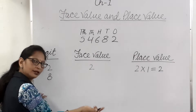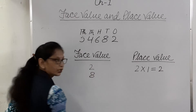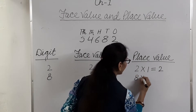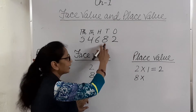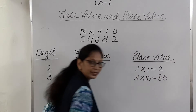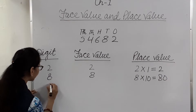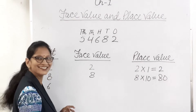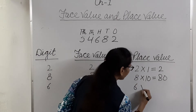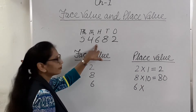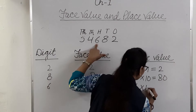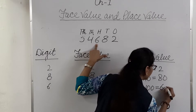What is the face value of 8? Face value of 8 is 8 because face value never changes. And place value of 8 is 8 multiplied by the place where it is put. 8 is in the tens place. So 8 multiplied by 10 equals 80. Next digit is 6. Face value of 6 is 6. And place value of 6 is 6 multiplied by its place — 6 is in the hundreds place. So 6 multiplied by 100 equals 600.